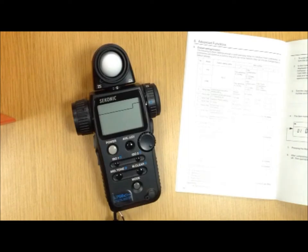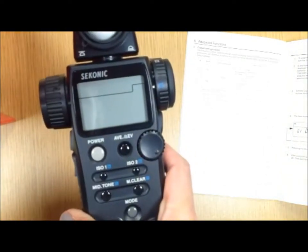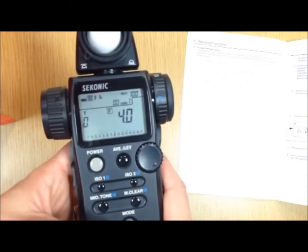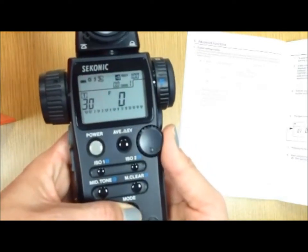All of these functions are custom settings in the custom setting menu. When you first turn on your device by pressing the power button, you'll see that the default metering mode is shutter and aperture. And when you press the mode button and cycle through those modes,